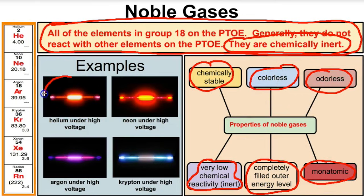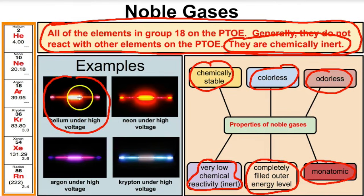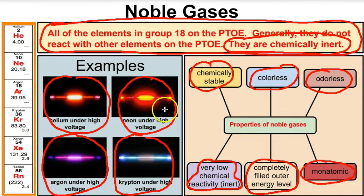Here we can see helium, neon, krypton, and argon under high voltage. Even though they're colorless normally, passing electric current through them makes electrons jump from higher to lower energy levels, emitting light. The light emitted corresponds to a certain energy — for example, helium emits relatively low frequency, low energy light. If you've ever seen a neon sign, that's the same principle: neon gas in tubes, and passing electric current through produces that nice red glow.